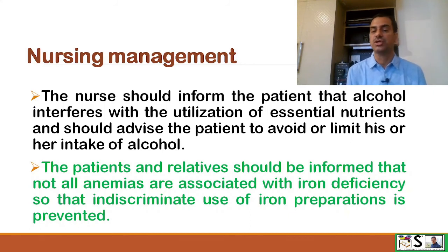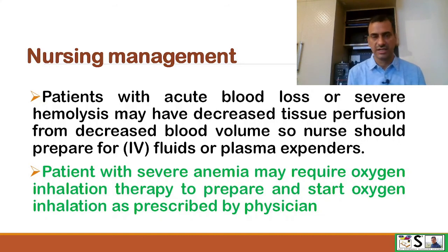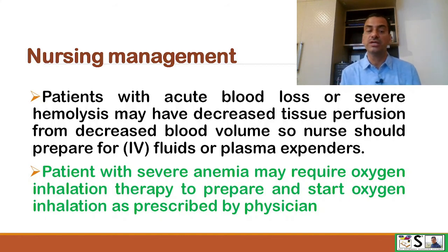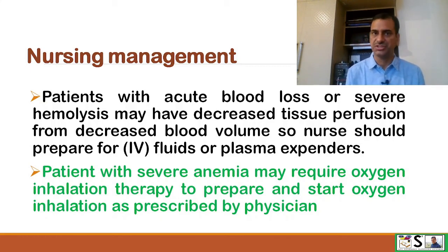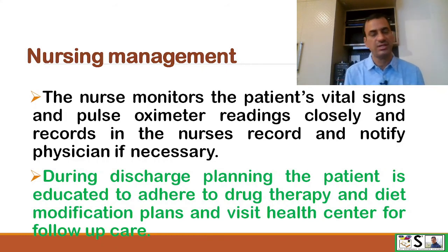The patient and relatives should be informed that not all anemias are associated with iron deficiency, so that indiscriminate use of iron preparations is prevented. Patients with acute blood loss or severe hemolysis may have decreased tissue perfusion due to decreased oxygen and RBCs from reduced blood volume, so the nurse should prepare IV fluids and plasma expanders as prescribed. Patients with severe anemia may require oxygen inhalation therapy. The nurse should closely monitor the patient's vital signs and pulse oximeter readings, recording them and notifying the physician if necessary.